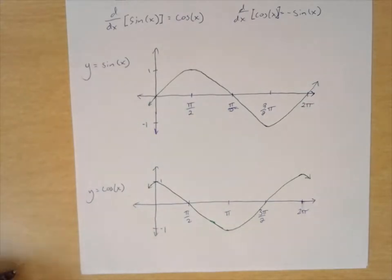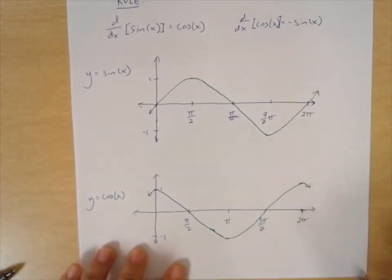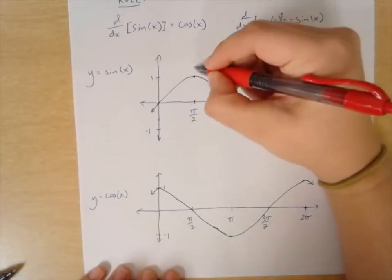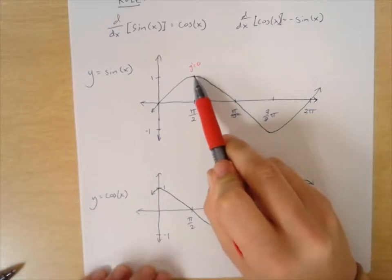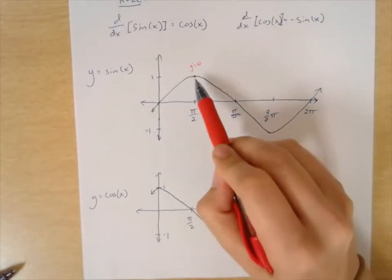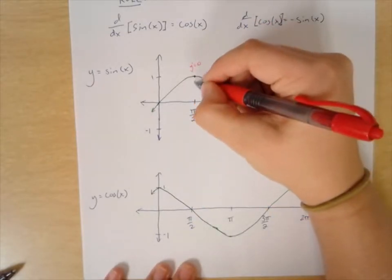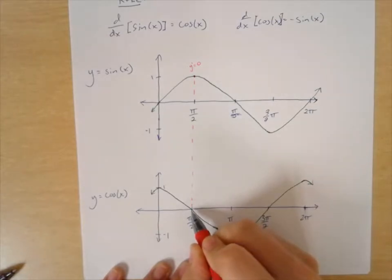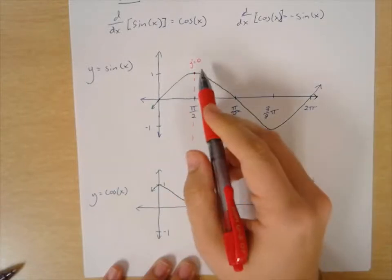Let's analyze why the derivative of sine of x is cosine of x. At π/2 for sine of x, the slope — y prime — is 0, because the graph reaches a peak and has a perfectly horizontal tangent there. Looking at cosine of x at π/2, its value is also 0, matching that slope value.